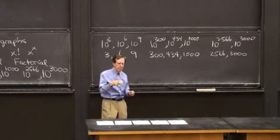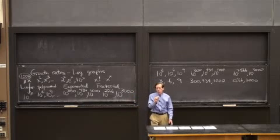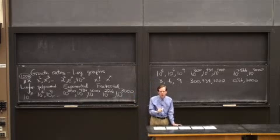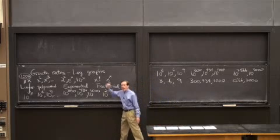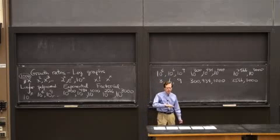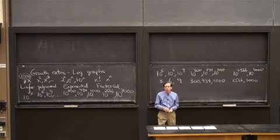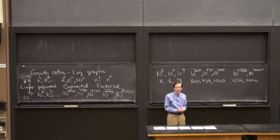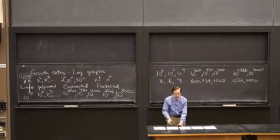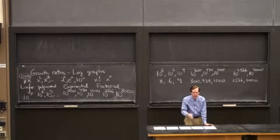Just to repeat, if I wanted this list of functions by how fast they grow, where would log x appear? It would be way at the left end, slower than x, much slower than x. Log x grows very slowly, as we see here. And then if you wanted one that really grew slowly, it would be log of log x. That creeps along, eventually passes any number, but x has to be enormous.